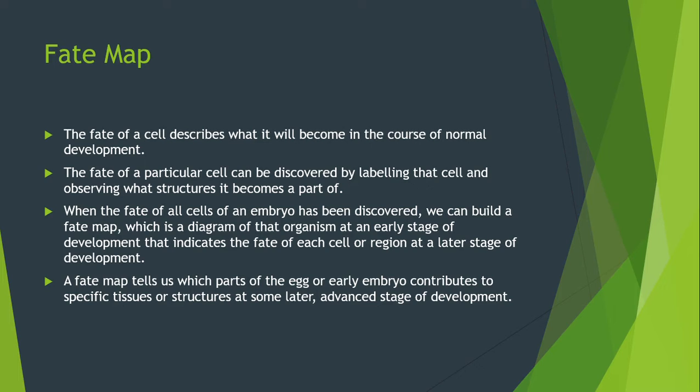When the fate of all cells of an embryo has been discovered, we can build a fate map, which is a diagram of that organism at an early stage of development that indicates the fate of each cell or region at a later stage. A fate map tells us which parts of the egg or early embryo contribute to specific tissues or structures at some later advanced stage of development.